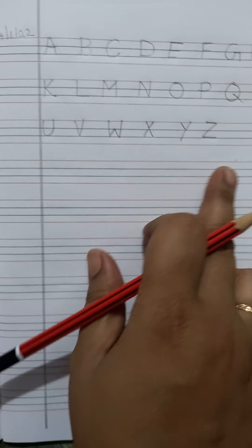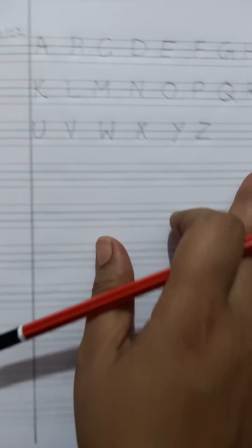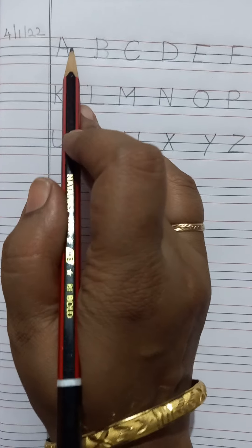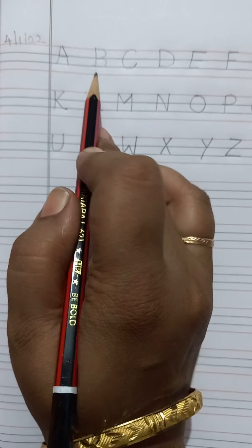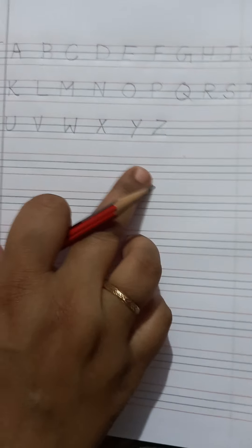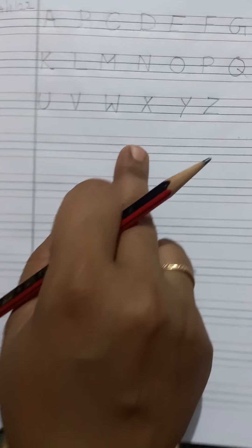Okay children? See? Like this way you have to write. You have to leave space between two letters. Or you can put line and you can write it. See how I have written? Same way you want to write.